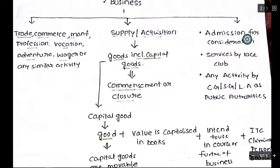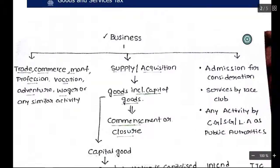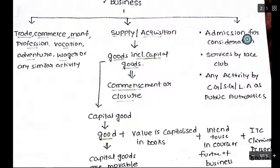What is business? Generally, business means trade, commerce, manufacturing, provision, vocation, adventure, or any similar activity. But in GST, the definition of business includes commencement and closure, meaning that if any goods are sold at the time of commencement or at the time of closure of business, there is a need to levy GST.